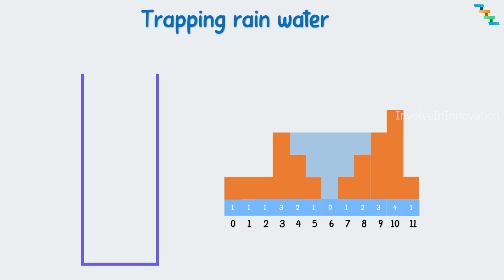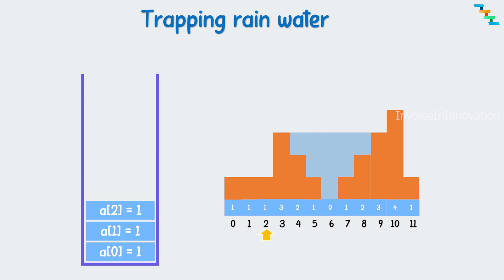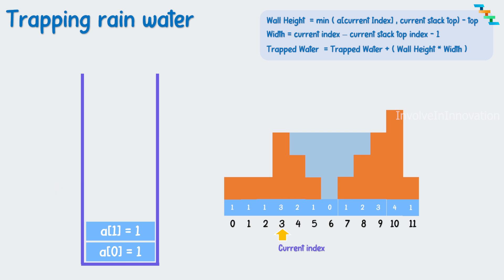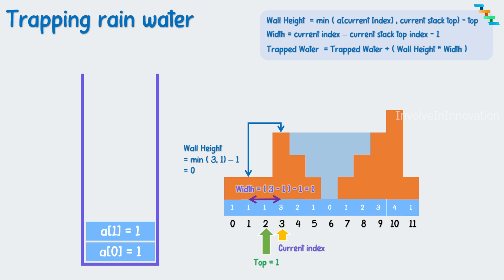Initially the stack is empty, so add the first element index to the stack. In the stack we will store the index. Check the next element: if it is less than or equal to the top of the stack, add this element index to the stack. Continue adding indices while elements are less than or equal to the top. When the next element is not less than the top, pop the top of the stack and reference it as top. We need to calculate the wall height and the width. Trapped water is the product of these two values. First, calculate the width: current index minus current stack top index minus one.